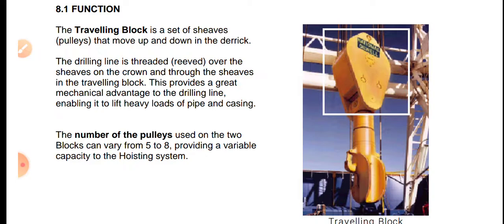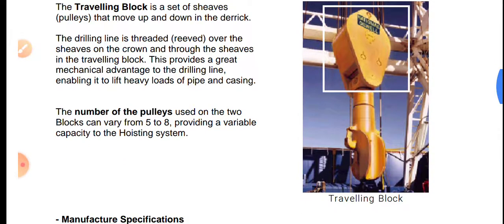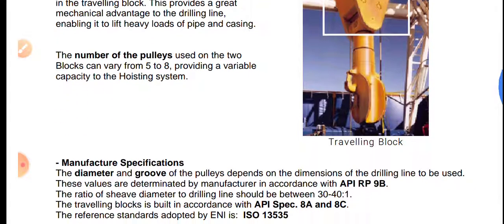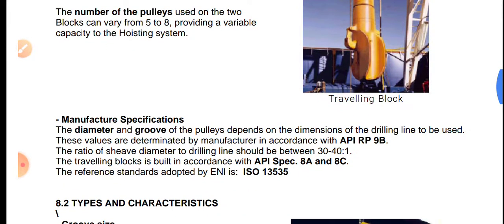This provides a great mechanical advantage to the drill line, allowing it to lift heavy loads of pipe and casings. The traveling block is the only member in the entire rig that lifts the total load. The number of pulleys used on the two blocks can vary from 5 to 8, providing variable capacity to the hoisting system.